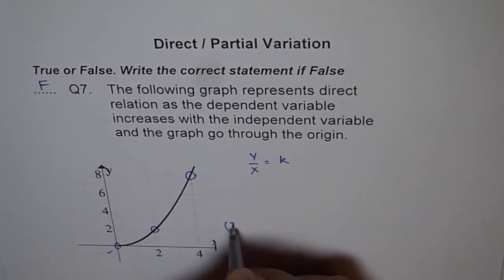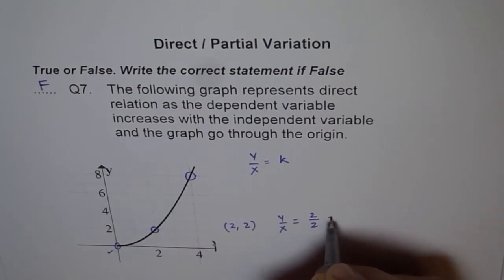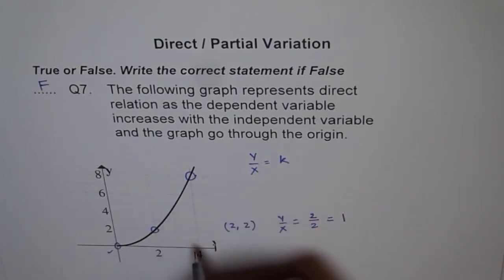The point is 2 is the x value, y value is 2. So ratio of y to x is 2 over 2, which is 1. How about this point?